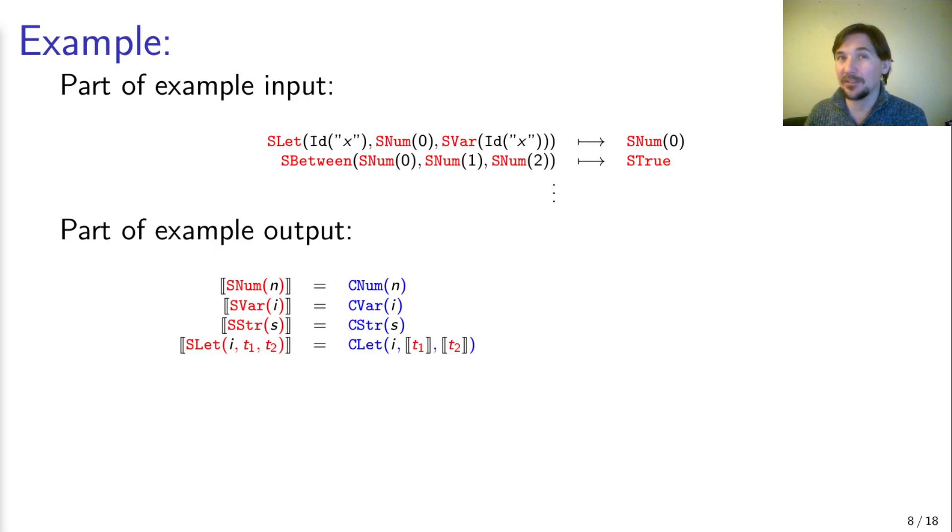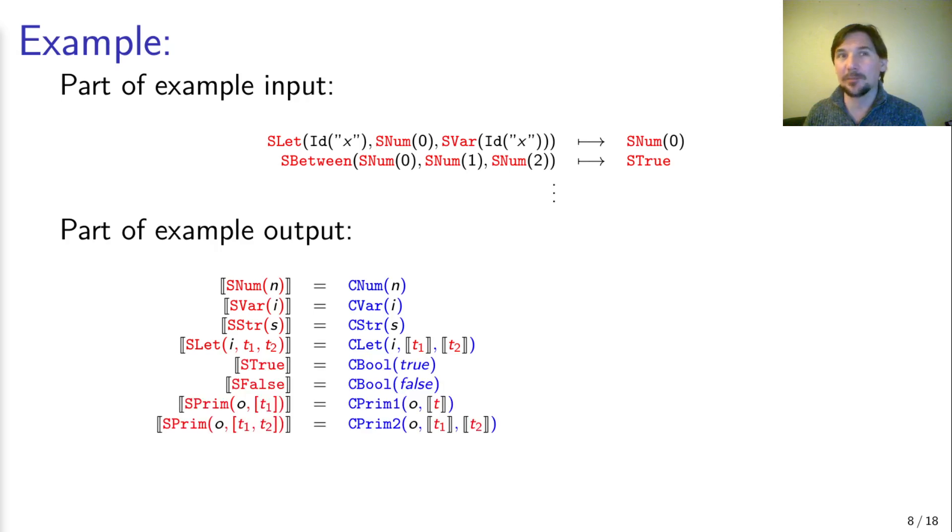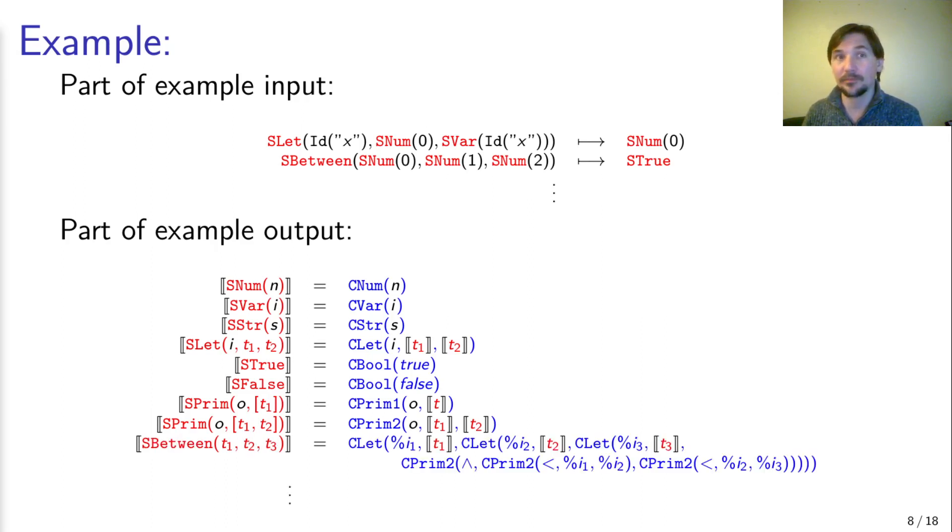Some rules are relabelings. Simple constructs tend to be included in both the source and the core version. Some are simple mappings between slightly different representations. The two pigeon examples are translating between different representations of booleans and between different representations of primitive operations. And some translation rules are more complex. One pigeon example is expressing the s-between source language construct by primitive operations in the core language, where we also need to control the evaluation order of arguments.